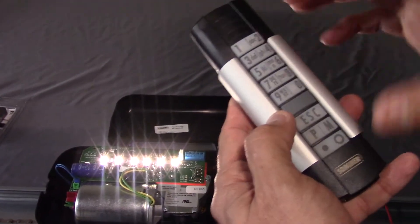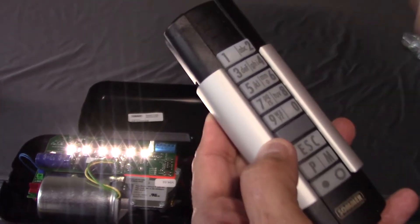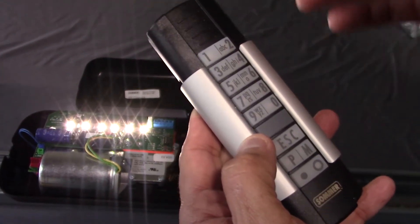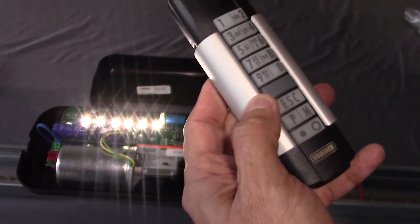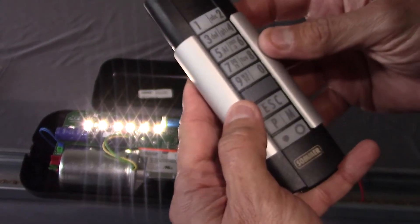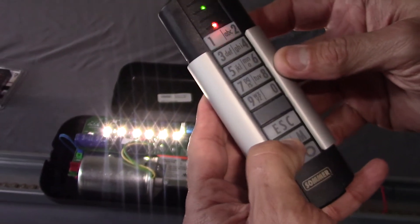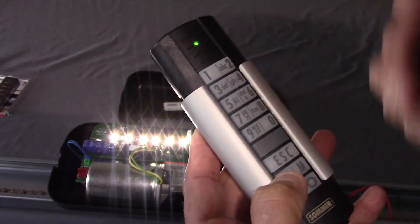Now we're going to program a code to the keypad. For example, I'm going to use 1234 as my code. To program the code, the first thing you do is press the letter P to get into programming mode.